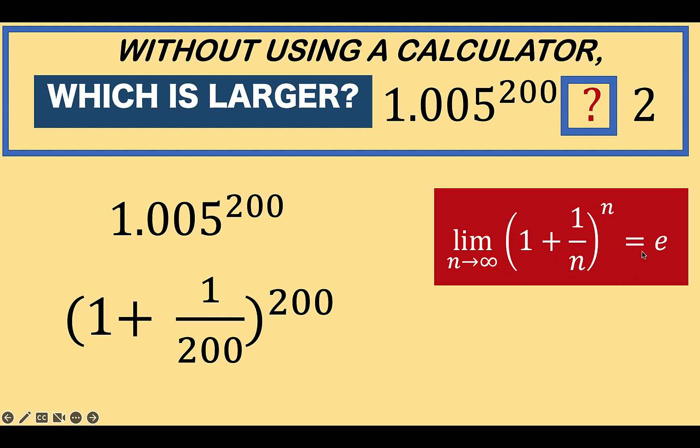But this equation at the right gives us the upper limit when n approaches infinity. Here, 200 is nowhere near infinity. We only know that this has an upper limit of about 2.71. So still, this does not prove that this number 1.005 raised to 200 is greater than 2.